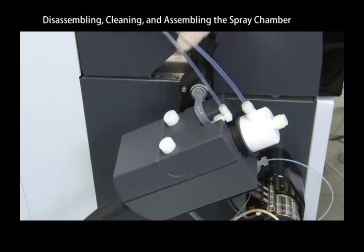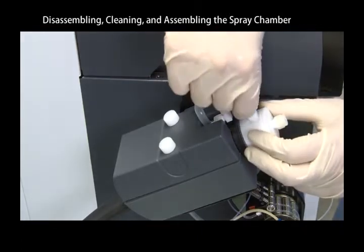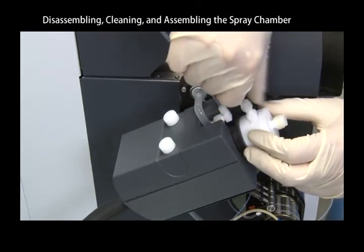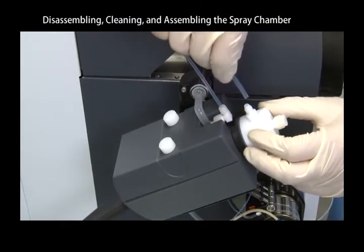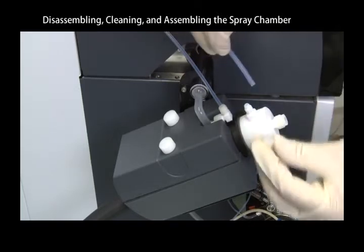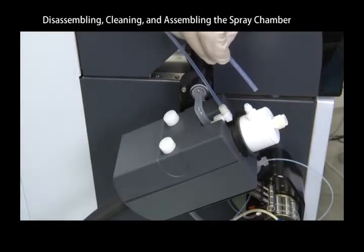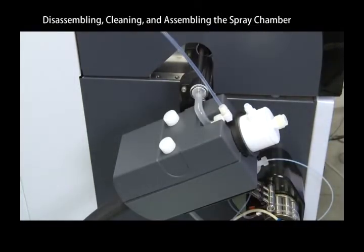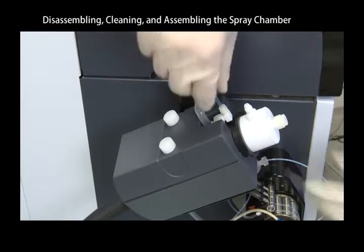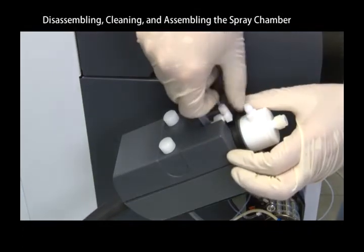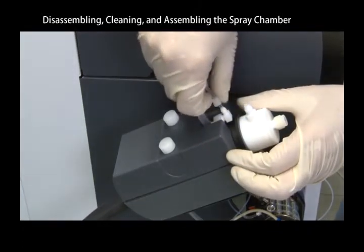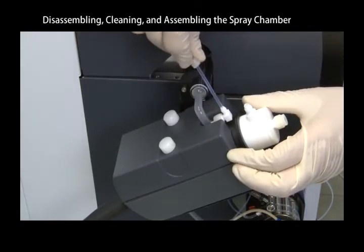Remove the clamp between the spray chamber and the connector tube. Loosen the make-up gas connector to disconnect the make-up gas tubing from the end cap. Loosen the dilution gas connector to disconnect the dilution gas tubing from the dilution nozzle.